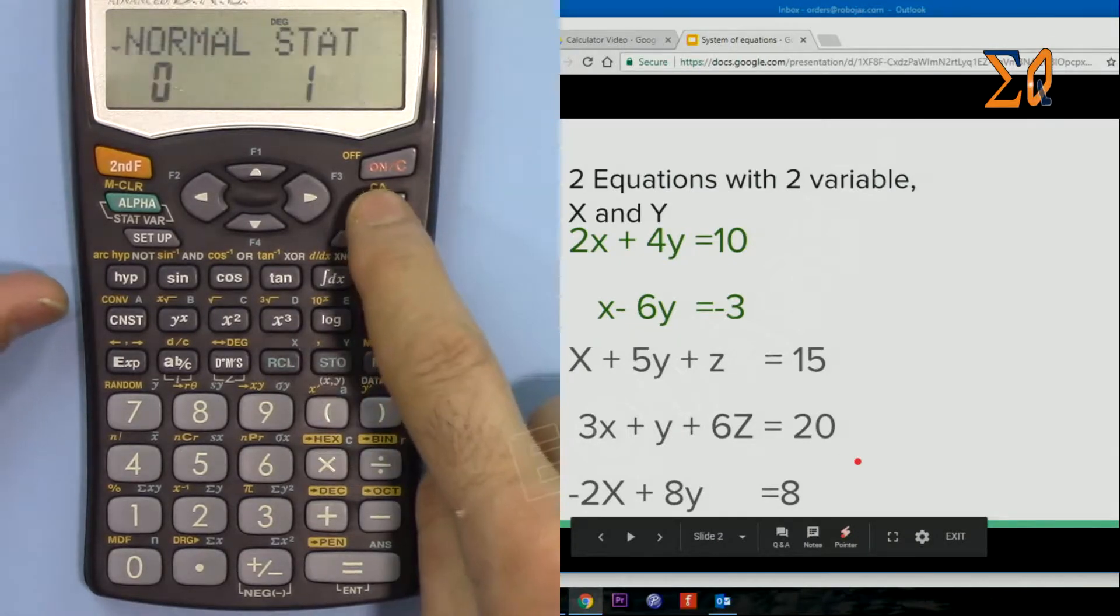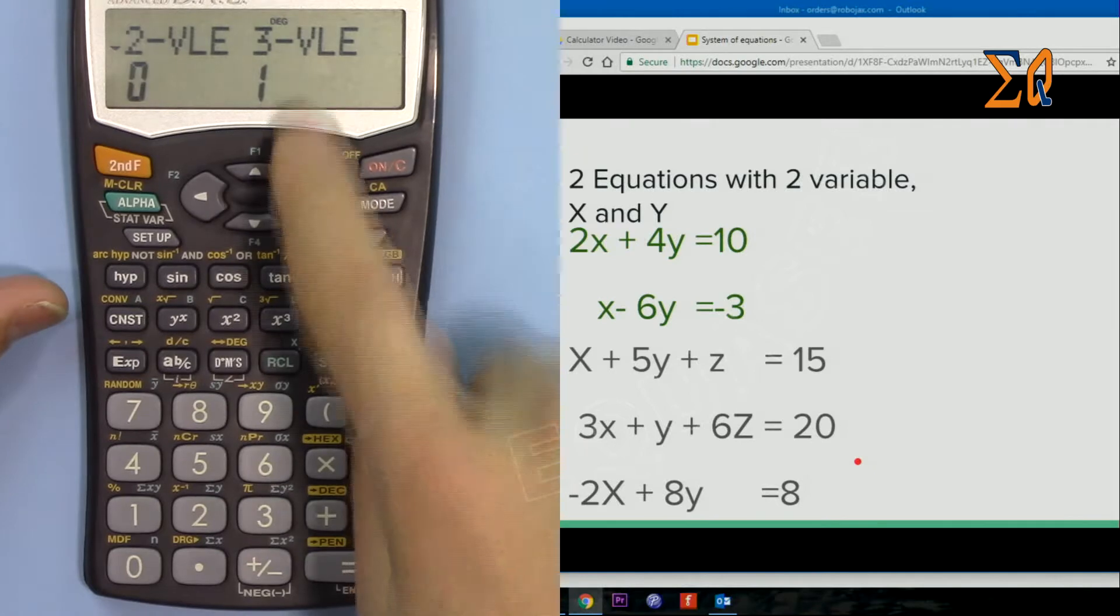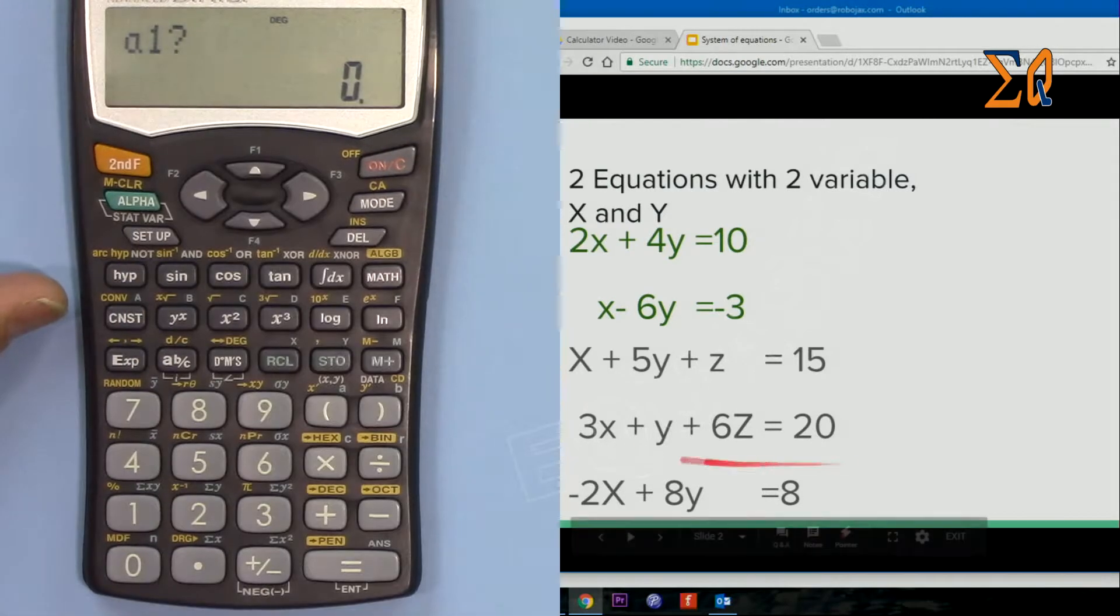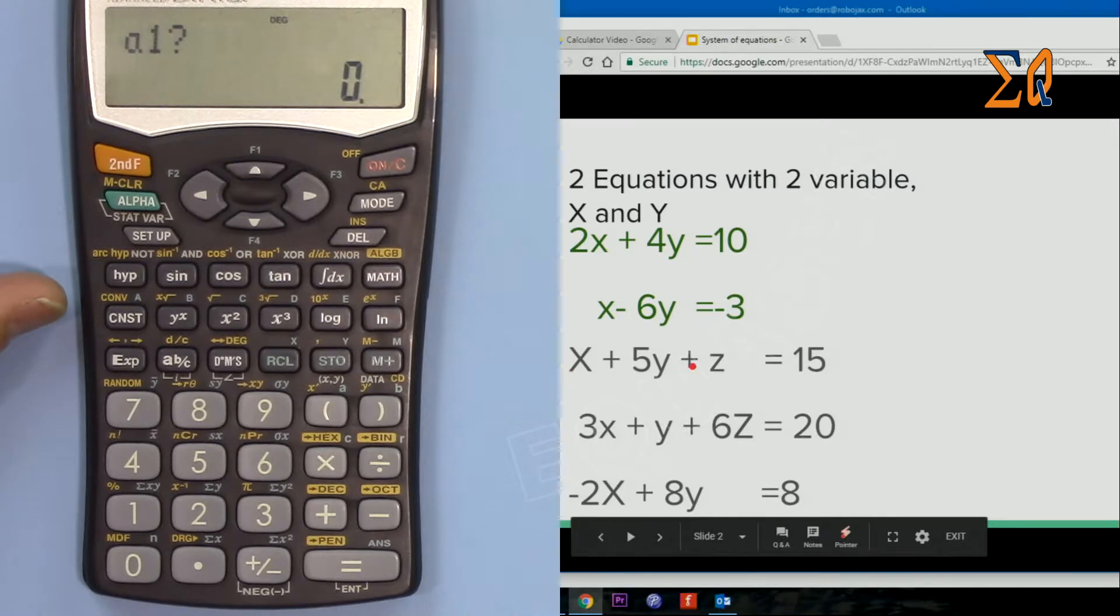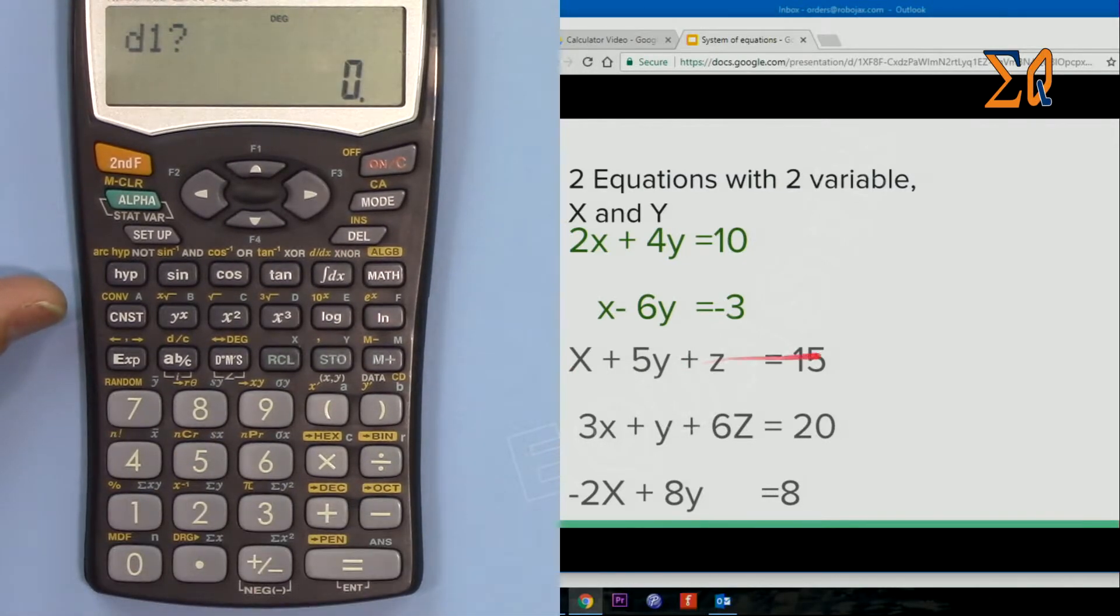So press MODE, go down, 2 for equation and then 3 VAL, press 1. Now A1 here is 1, and then 5 and 1. 1, 5 and then 1. And then D is the coefficient of Z, which was 1, so D is now 15.